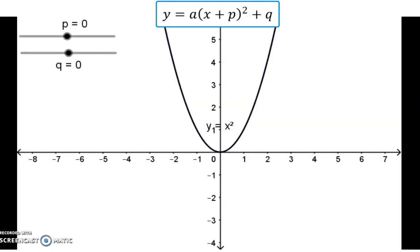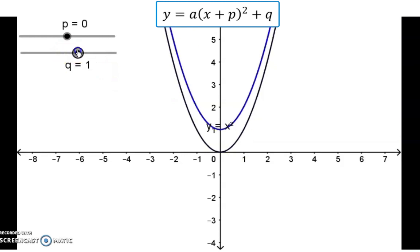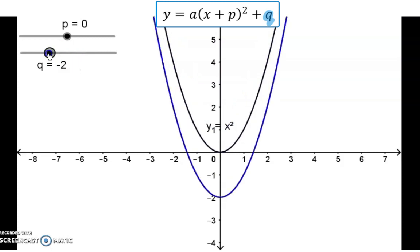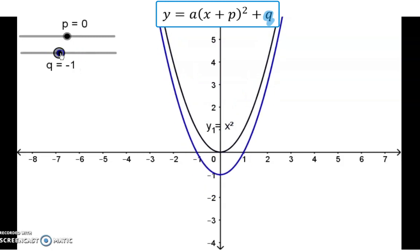Once again, we start with our mother graph, which is the equation y is equal to x squared. We already know that adding a constant value right at the end moves the graph vertically upwards or downwards.